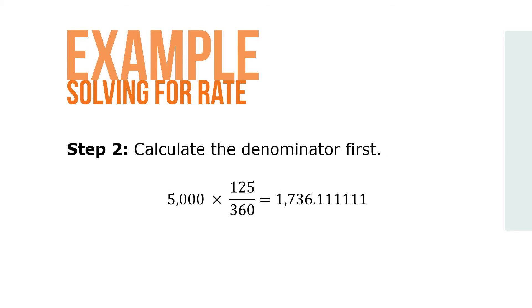Step 2: Calculate the denominator first. 5000 times 125 over 360 is 1736.111111.